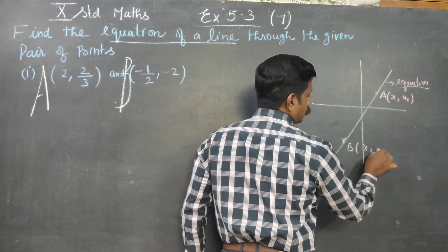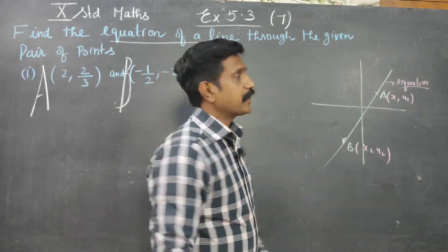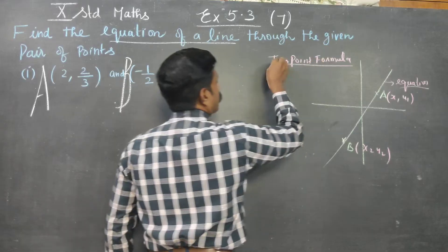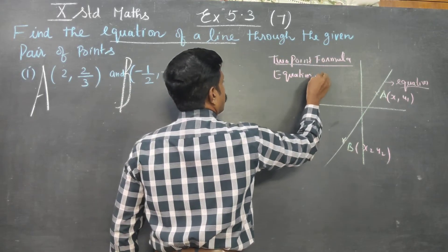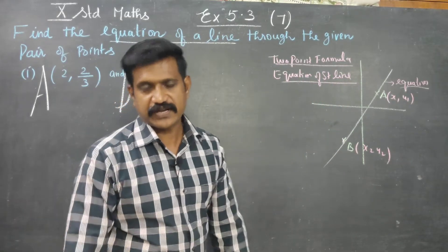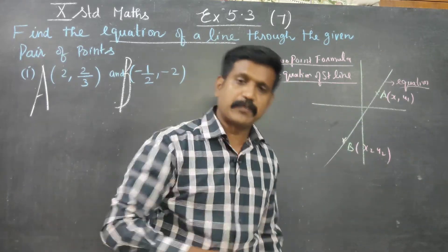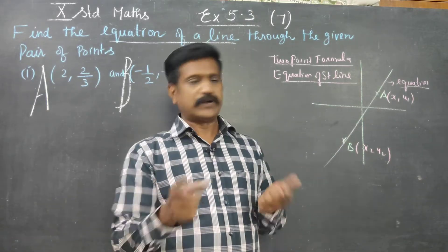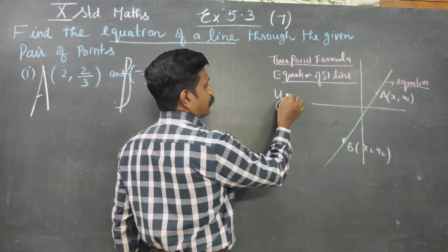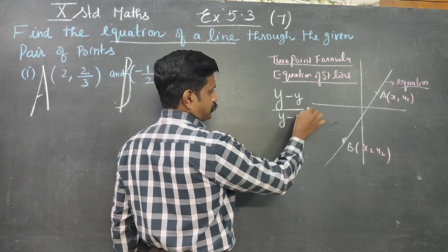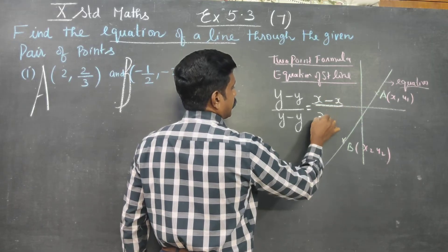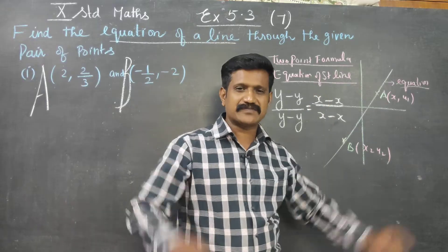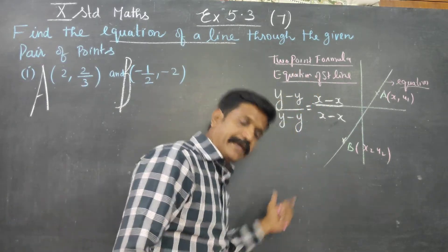We have x1, y1 and x2, y2 — two point formula. Using the two point formula to find the equation of a straight line. The two point formula is: y minus y1 by y2 minus y1 is equal to x minus x1 by x2 minus x1.